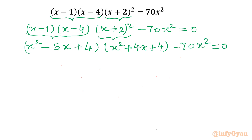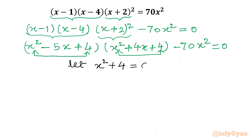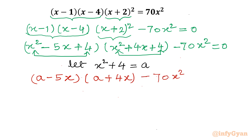Now you can check how many substitutions we can apply here. It is easily visible that if we consider these two terms for our substitution, we can proceed easily. So I am going to substitute x² + 4. Let us consider x² + 4 = a. So our equation becomes (a − 5x)(a + 4x) − 70x² = 0.